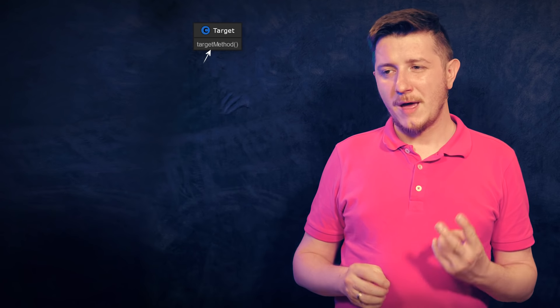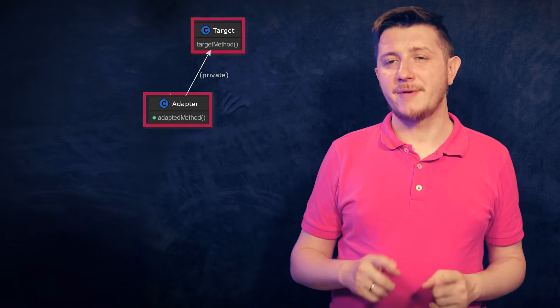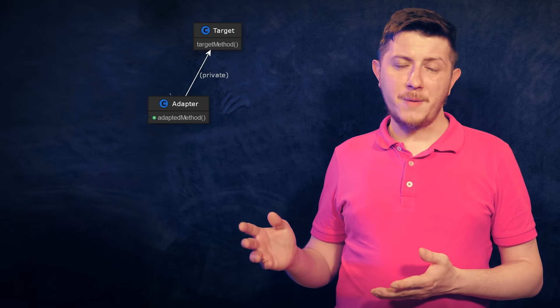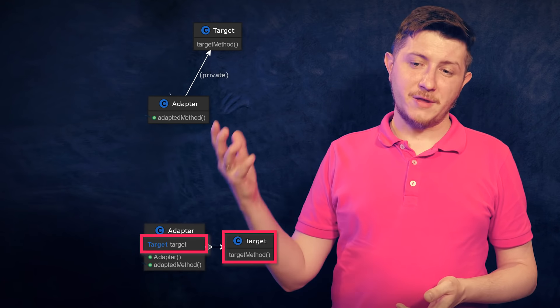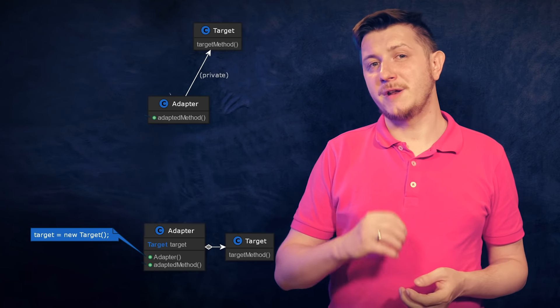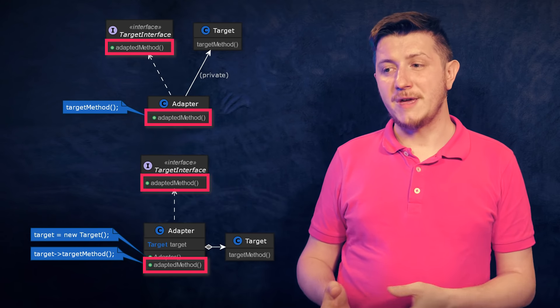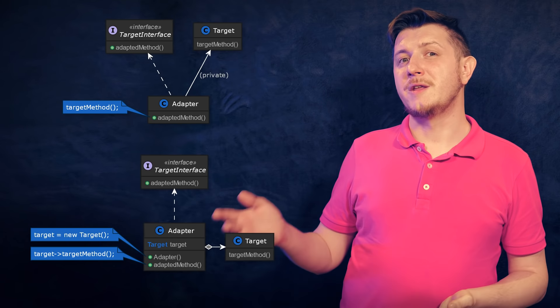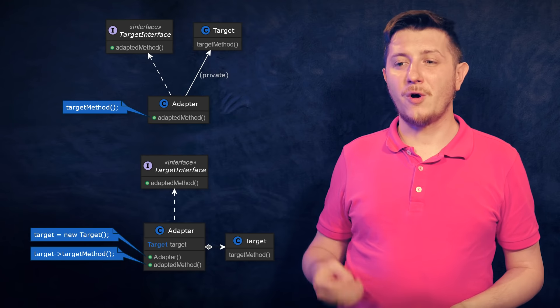In order to create an adapter, we need to do one thing first: we need to declare that our adapter will implement the given interface that we are adapting to. Then all we have to do is wrap the object that we are going to be adapting. We can do it two ways. One way is to inherit from this object and do it privately, so no fields or methods from the adapted object are exposed outside of our adapter class. Or we can use composition and create this object in the constructor of our adapter and assign it to a field. The second step is to implement all the methods the adapter must implement to adhere to the interface, and in those implementations we simply call the methods of the adapted object.